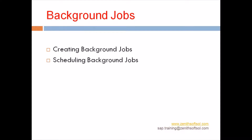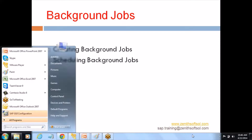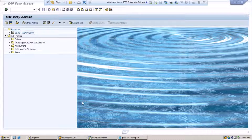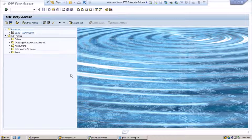Hello everybody. As you have seen in our last topic, we covered the concept of background jobs, the types of jobs, and the steps used in jobs. Now we are going to see how to create background jobs and how to schedule them. In the SAP system, background processing is mainly used for execution of regular scheduled jobs. You will be getting the job name, program, and steps from a functional consultant, and then you have to schedule the job accordingly.